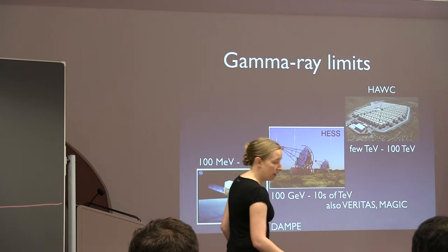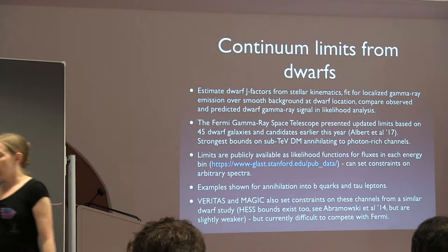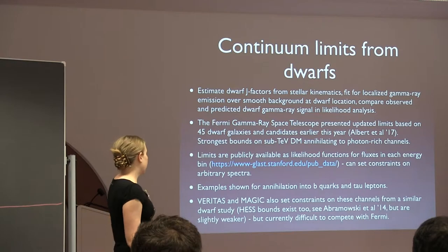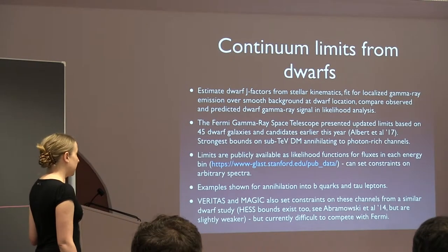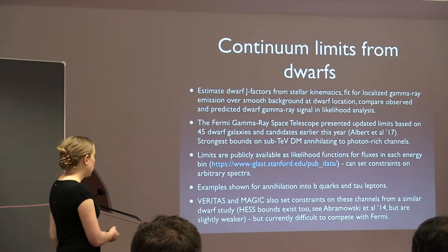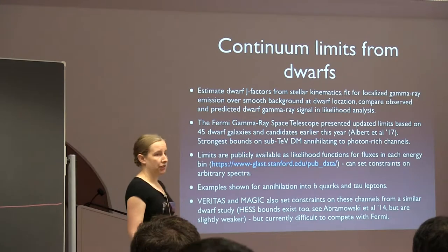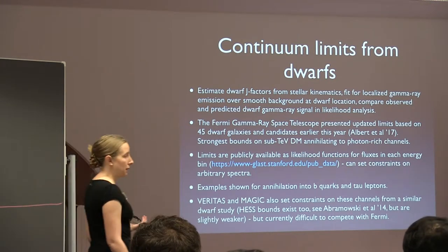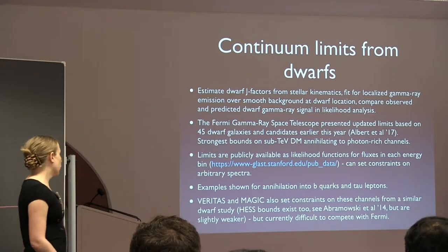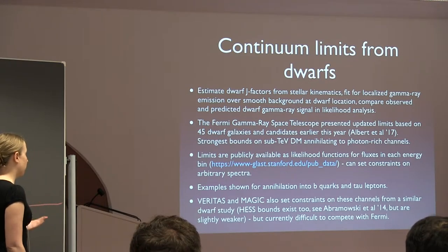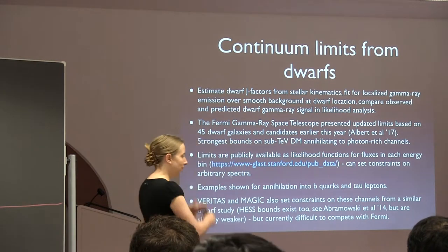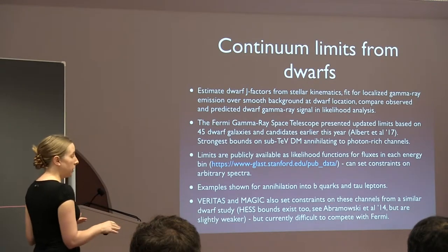What can we do with this array of telescopes to search for dark matter? One leading approach is to look at dwarf galaxies of the Milky Way — they're relatively close, on the order of tens of kiloparsecs, and have very little baryonic matter, so backgrounds are expected to be small. You estimate the dwarf J-factors from stellar kinematics, and for your preferred dark matter model parametrized by a standard model two-body final state, you predict the spectrum and magnitude you would expect to see.